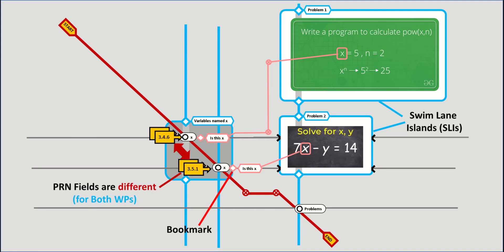For example here, while both white pearls are named x, one can see via their bookmarks that their x's refer to different x's in different equations. I got it.